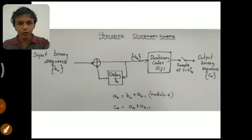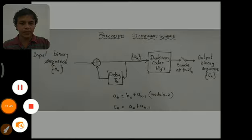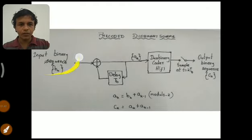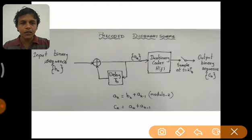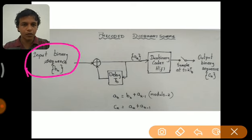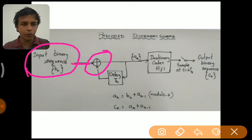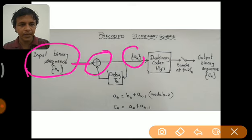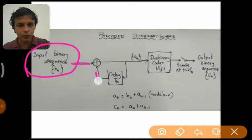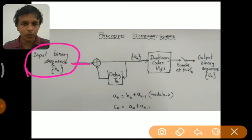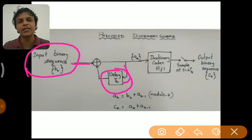In pre-coded duobinary scheme, the input binary sequence of zeros and ones enters into a block where modulo-2 addition is performed, which is nothing but XOR operation. The output of this XOR operation is AK. This AK is transmitted to one of the inputs of the modulo-2 adder through a feedback path passing through a delay block.